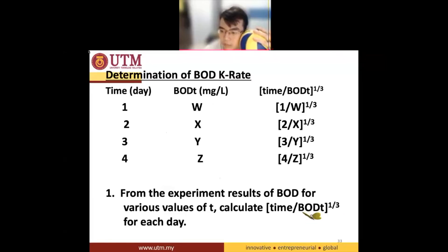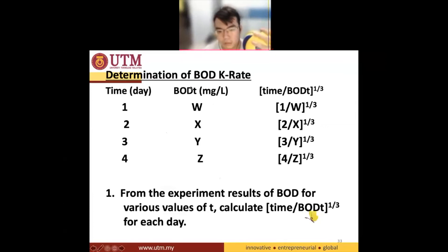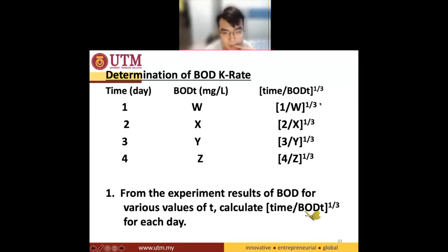After day one, take out one bottle only and then measure the BOD. So you get the BOD to be W. You then calculate the value: 1 divided by BOD W, to the power of one third.